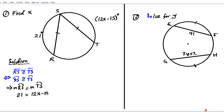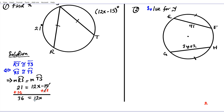Now we flex our algebra skills to solve. We have 21 equals 12x minus 15. Add 15 to both sides: 21 plus 15 is 36, so 36 equals 12x. Divide both sides by 12, and x equals 36 divided by 12, which is 3. That's the answer to question one.